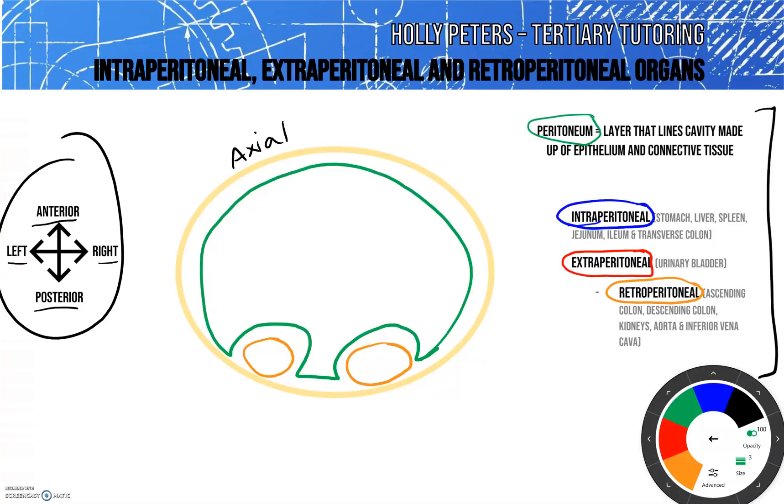So let's just do a quick recap. Intraperitoneal organs are found on the inside of the peritoneal cavity. Extraperitoneal organs are found on the outside of the peritoneum, and they have a subcategory called retroperitoneal organs, and they are on the outside of the peritoneum and found against the posterior wall.